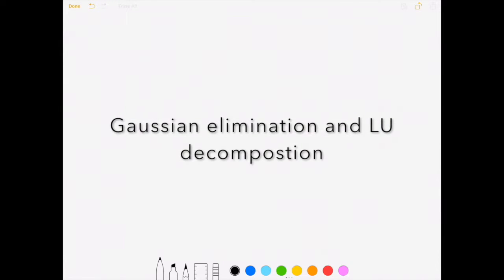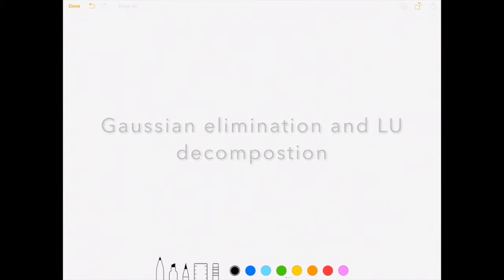So the method we all learn for solving systems of linear equations is Gaussian elimination, which is also known as row reduction. Here I want to review that method and then place it in the context of LU decomposition, where an arbitrary square matrix is decomposed into a product of lower triangular matrix and an upper triangular matrix.